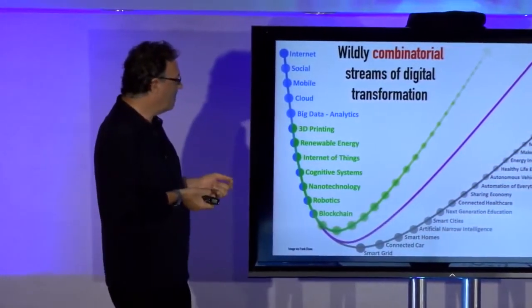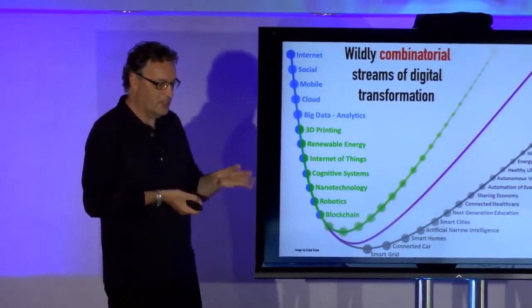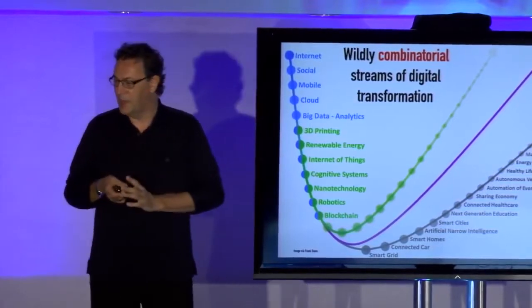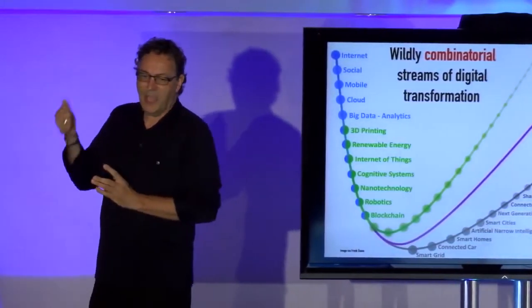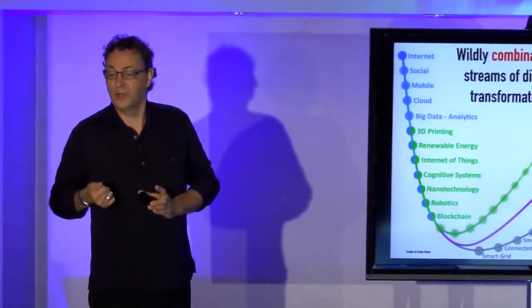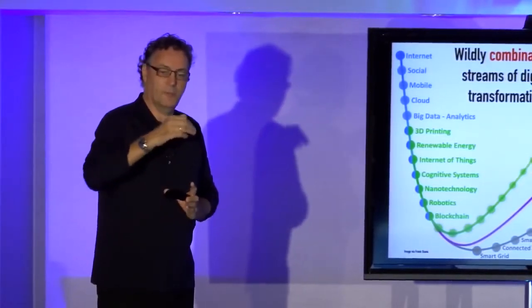My friend Frank Deana put together this slide which you can, when you download it, look at in more detail. But basically what it means is that we have exponential changes but they're also combinatorial. That means on top of each other.